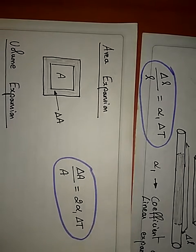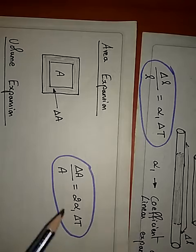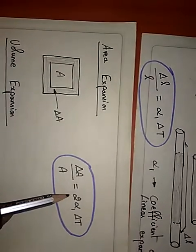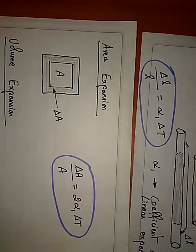Now, if you just see the relation, here it is alpha 1 into del T. Here it is twice alpha 1 into del T.